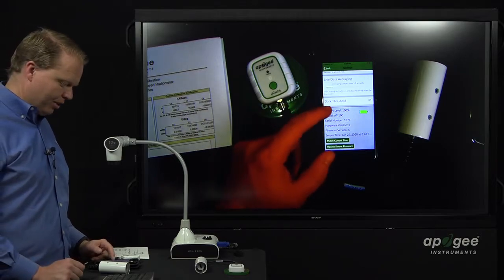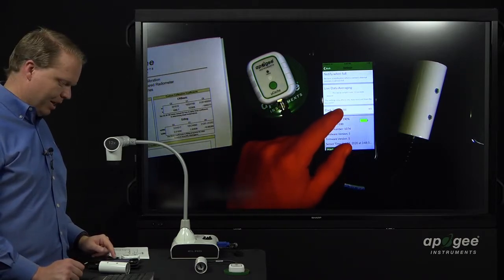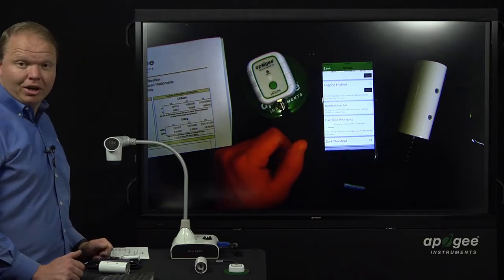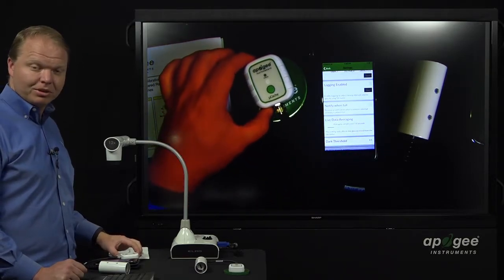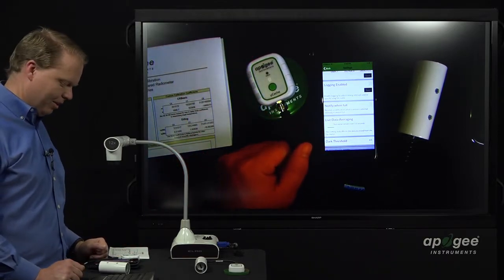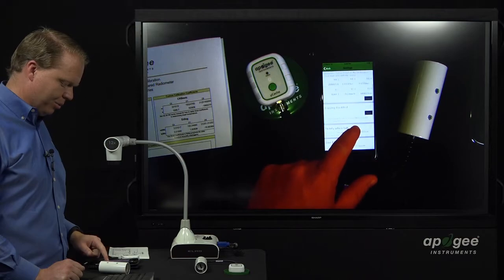So, that's your basic rundown on settings, dark threshold. That doesn't affect IR readings. And then notify when full. You can click on that so that once those 400,000 data points have been filled and you log in and connect to it, it will give you that notice. So, you can turn that on as you want.